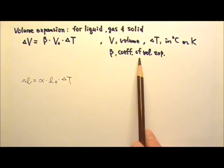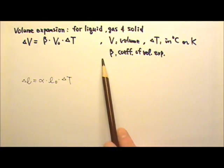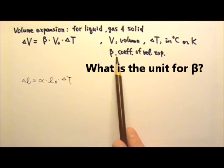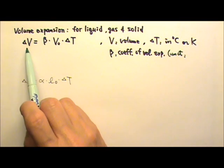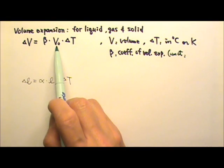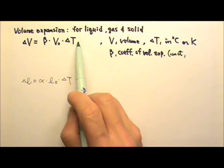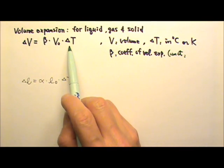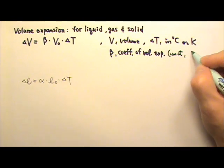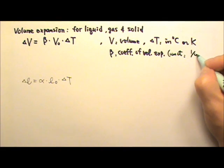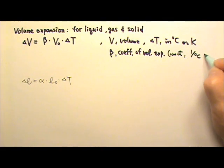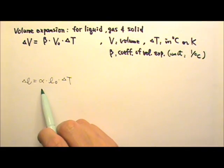What do you think is the unit for beta? Since delta V and V have the same units, the units for beta and delta T must cancel, so the unit for beta must be one over degree Celsius — the same unit as alpha.